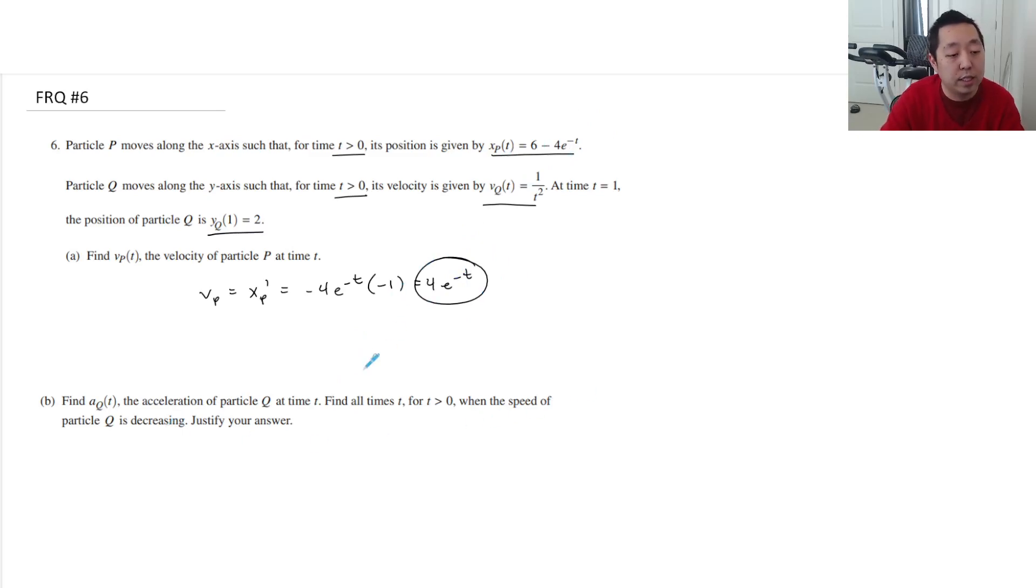Find Aq, the acceleration of particle at time t. For all times t greater than zero, when is the speed of the particle decreasing? Justify your answer. So Aq is equal to the derivative of the velocity. They gave you the velocity here. So Vq is equal to, I'm going to write as t to the negative 2. So when I take that derivative, it's going to be negative 2t to the negative 3, which is negative 2 over t cubed.